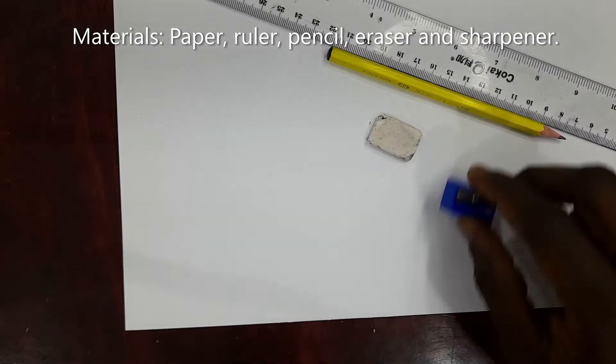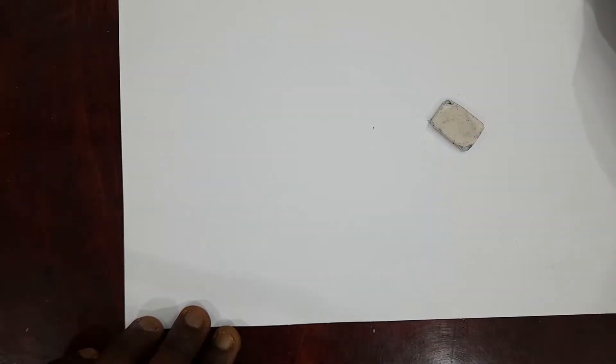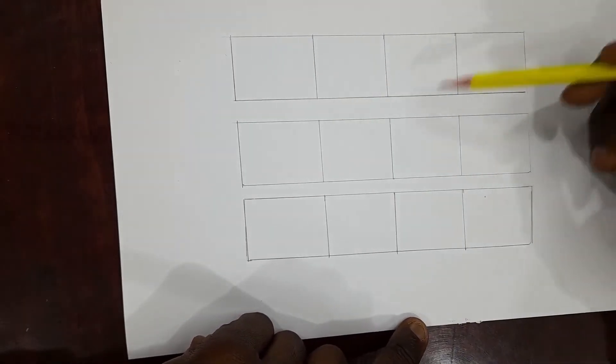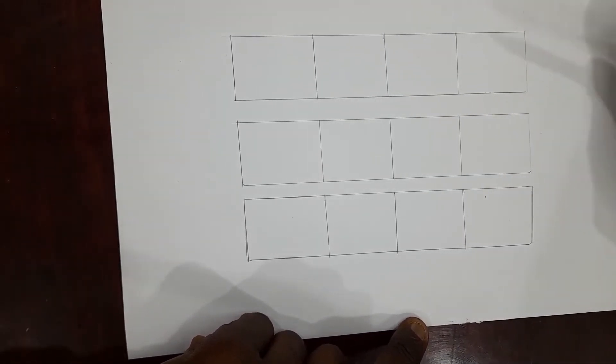Eraser and sharpener. The first thing we're going to do is to use our ruler to draw the spaces where we're going to do the shading, and I will be showing you three different techniques of shading and how to do this toner scale with them.